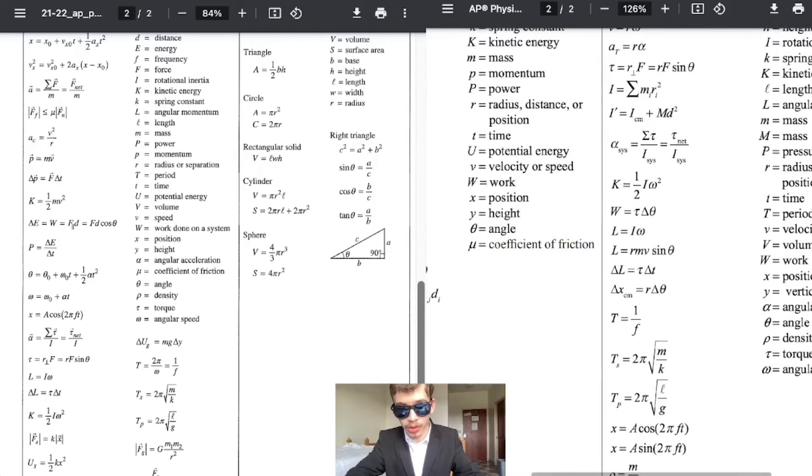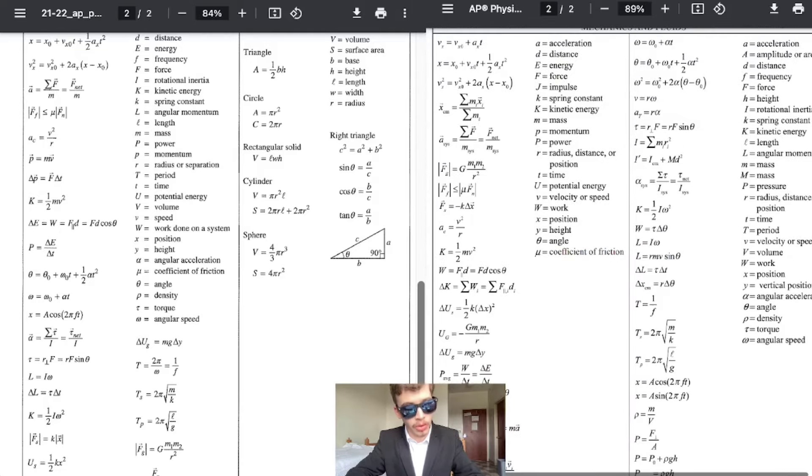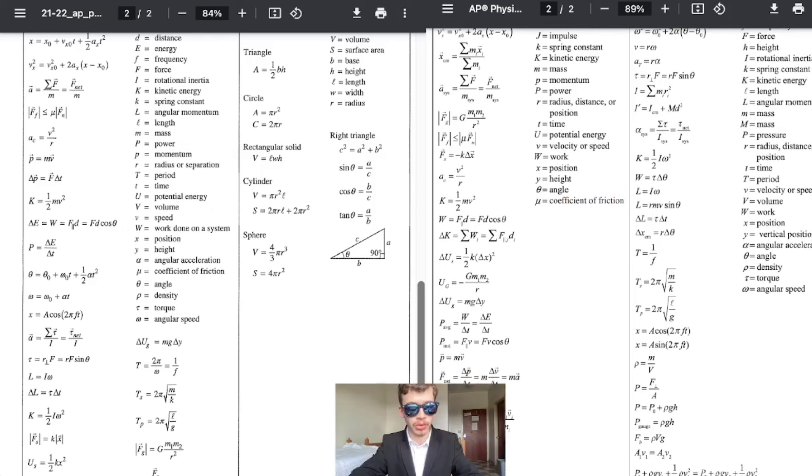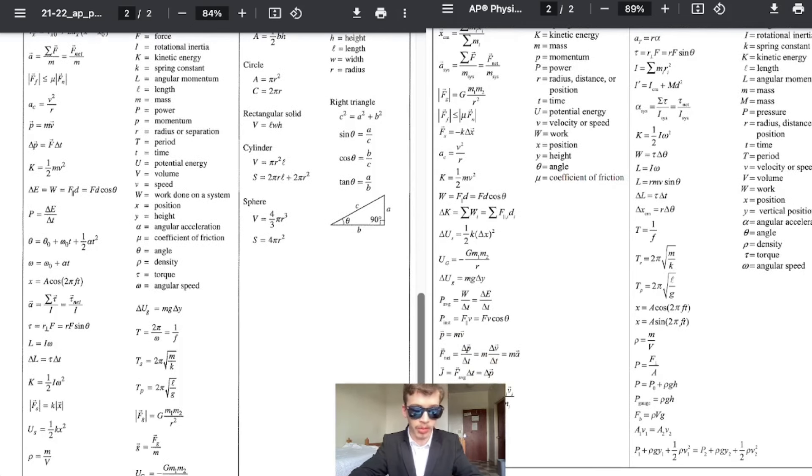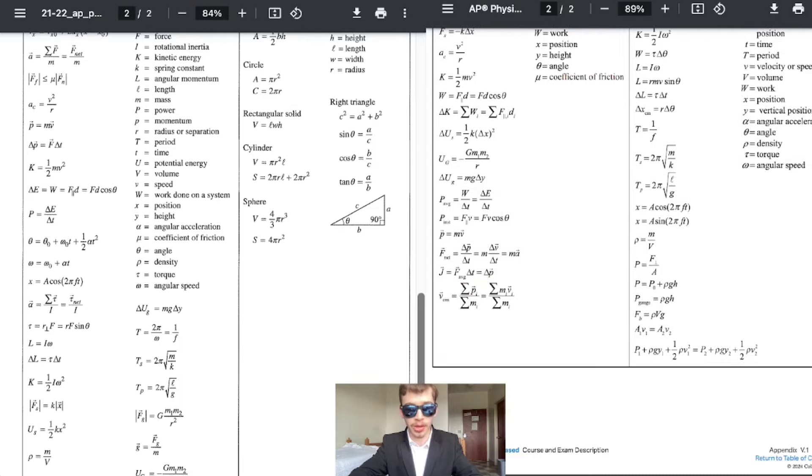Oh, and they did give you the translational formula for angular momentum, which is also quality of life. That one, you had to take some time to actually derive and understand it. It wasn't bad. Like once you got a hang of it, you knew what you were doing, but it's just convenient because now you have two formulas for angular momentum. And that is all for AP physics one formula sheet changes.